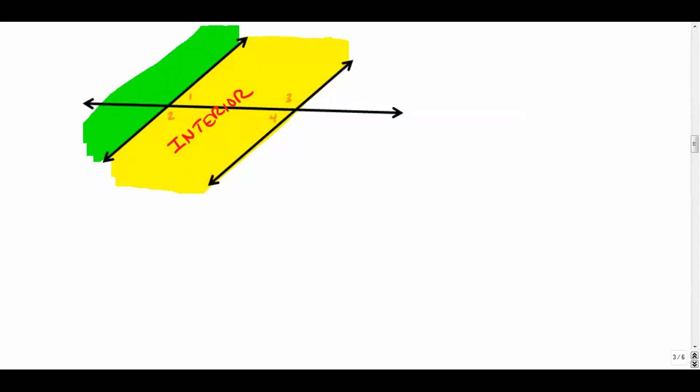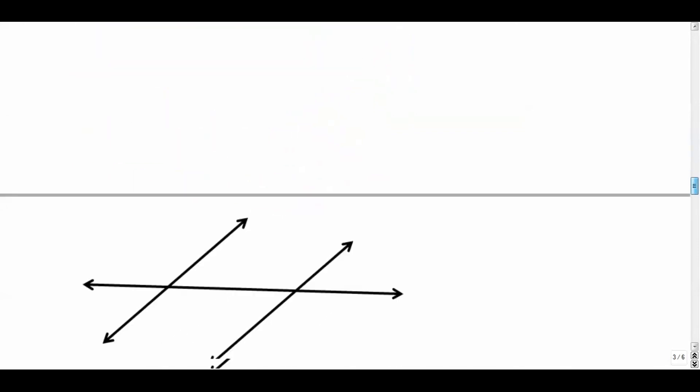So all these angles out here are exterior angles. So you can just highlight these. Hopefully you get the general idea that these angles out here are exterior. Maybe that's angle five, six, seven, and eight. These angles are on the outside of our parallel lines. So we call them exterior. That's going to be pretty important in our next set of relationships.